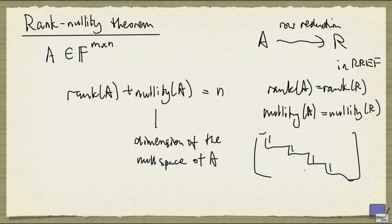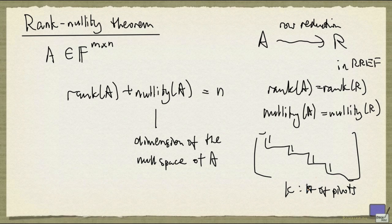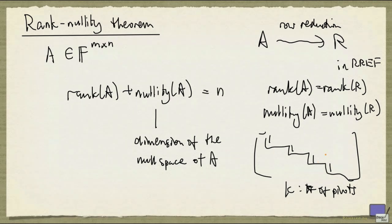And we know that the number of pivots, say there are k of them, gives you precisely the rank of the matrix. And the dimension of the null space is given by the number of non-pivot columns, and that's just n minus k.